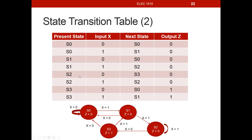Now, when the present state is S2 and our input x is a 0, we transition to S3. So this line of the table gets filled in: S2, input x is a 0, next state is S3, output is a 0. Whenever we're in present state S2, no matter what x is, our output will always be a 0, because the output in a Moore state machine is only dependent on the present state. When we're in state S2 and our input x is a 1, we're going to stay in state S2.